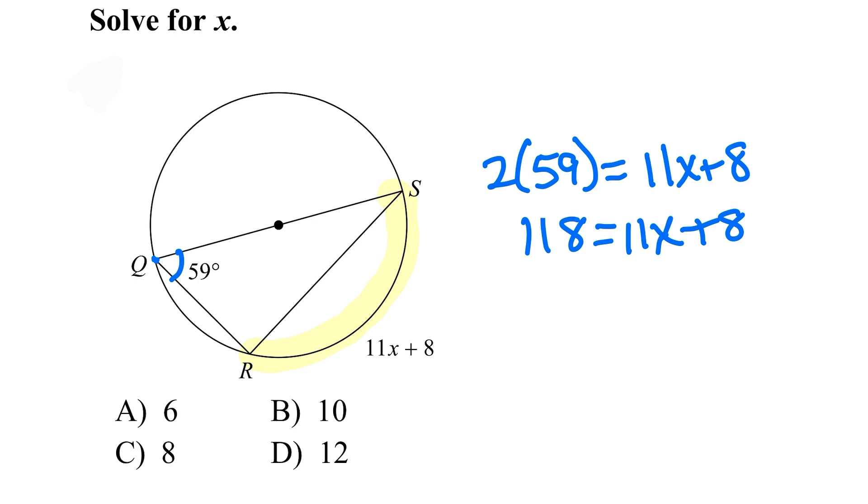I'm going to subtract 8 from both sides. I'm just going to do that in my head. 118 minus 8 is 110. That equals 11x. Then divide both sides by 11.